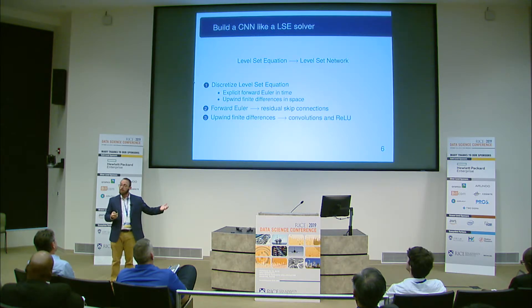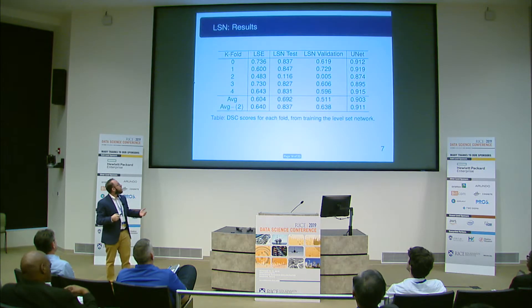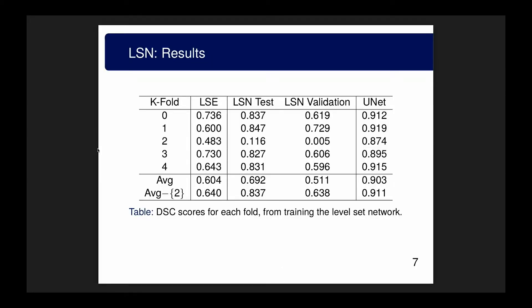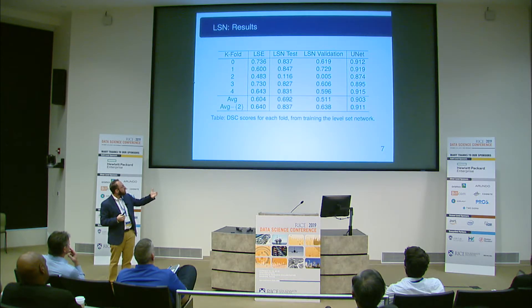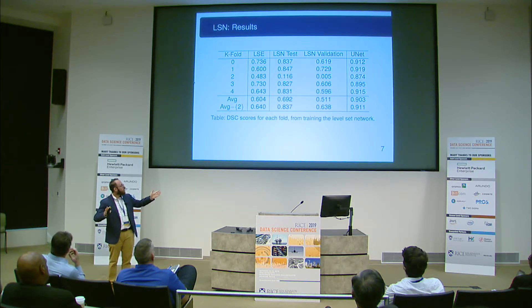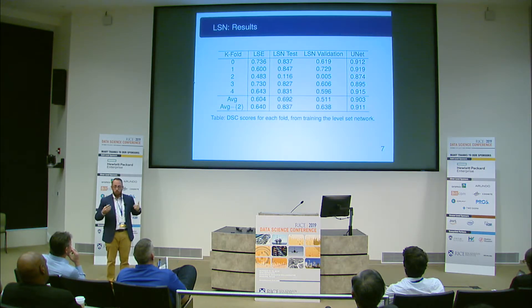We did this for our liver segmentation problem. On the left we have a level set equation implemented in a basic imaging toolkit. On the far right, a vanilla U-Net, nothing too tuned or fancy. These are dice similarity scores between zero and one, where one is a perfect match. Our method in the middle does much better than the level set equation on the test set, though not quite as good as the U-Net.